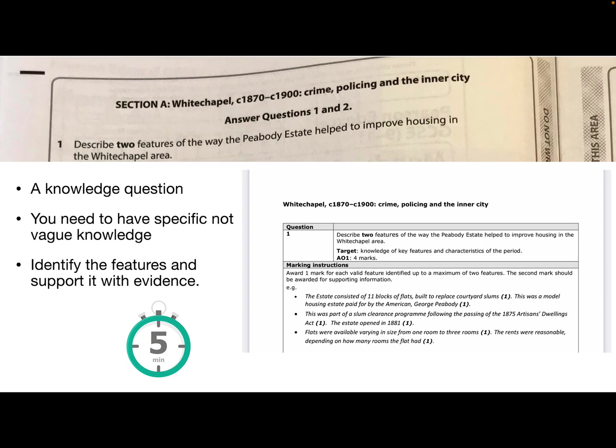The key thing you need to highlight in your question is the way the Peabody estate and improved housing. So this is a knowledge question and it gives you that feature one and feature two and you need to be specific not vague. You also need not just to give any information you know about the Peabody estate but it's got to think about how it improved housing. Identify the feature first of all and then support it with evidence. You can see in the mark scheme here and it's not exhaustive this mark scheme so if you pick something that is also relevant then that will get the mark as well.